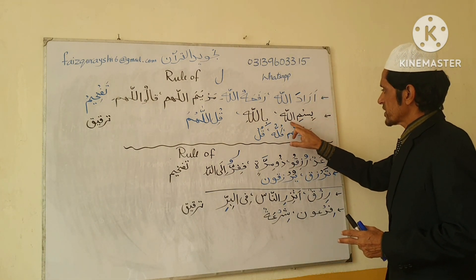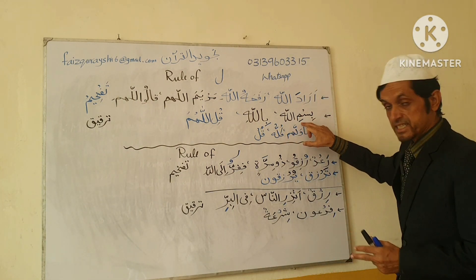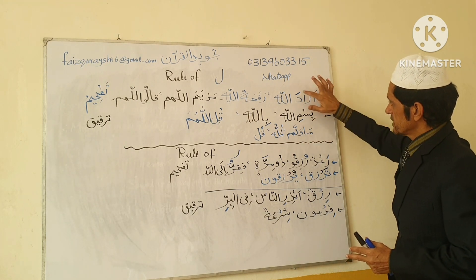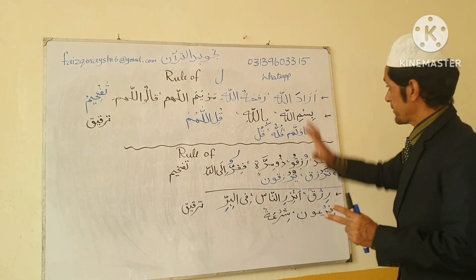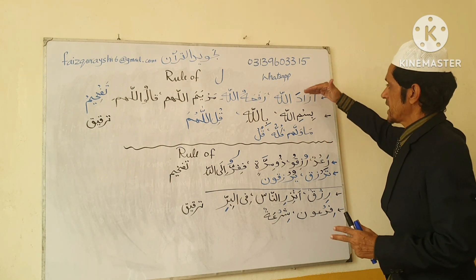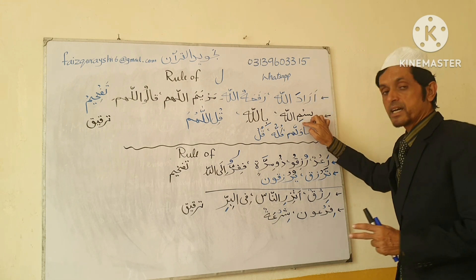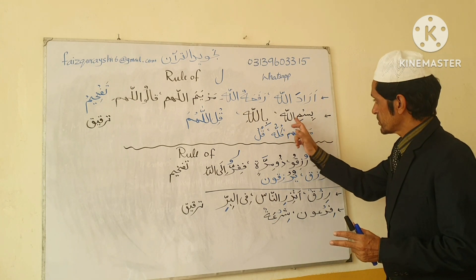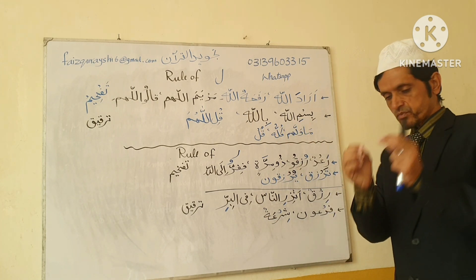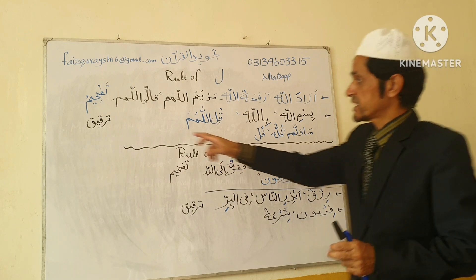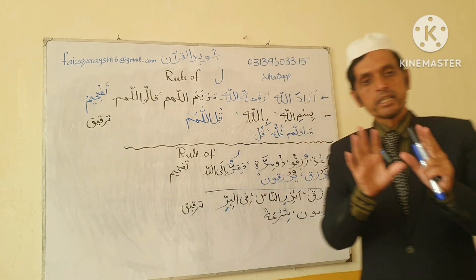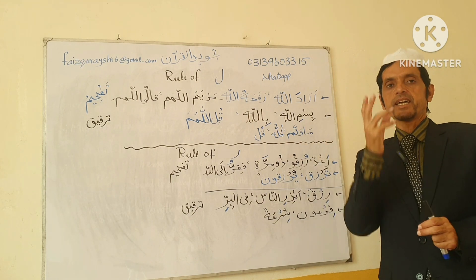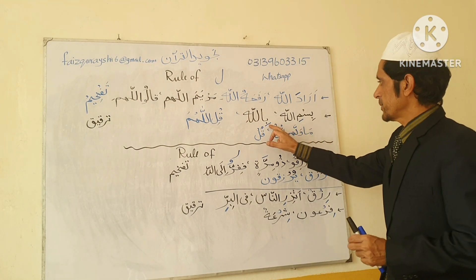Now if before the name of Allah there is Kasra — this symbol is Kasra, always under the letter, while Fathah is always above — then that Allah will be read with Tarqeeq, meaning not with a full mouth. For example: 'Bismillah, Bismillah, Billahi' — Ba has Kasra before the name of Allah. Likewise before Allahumma: 'Qulillahumma' — if there is Kasra before it, we read with Tarqeeq.